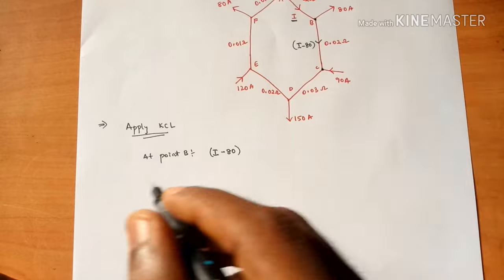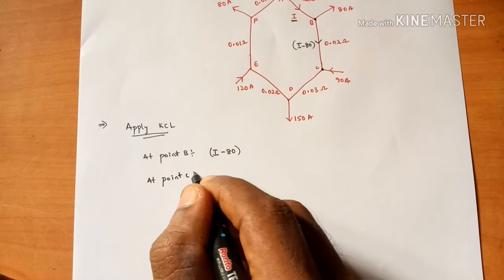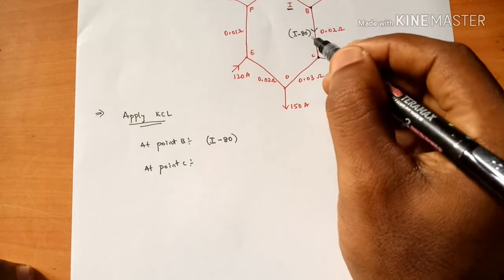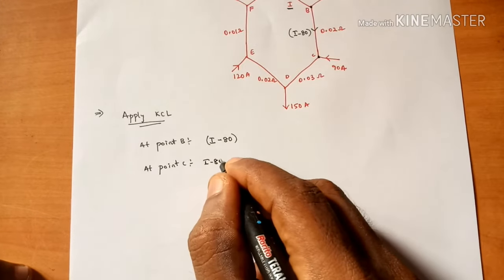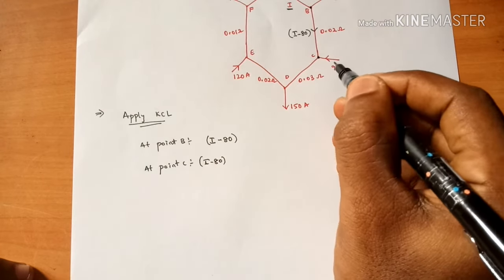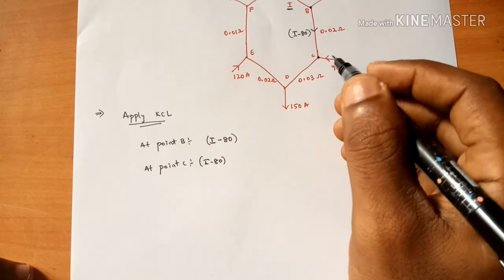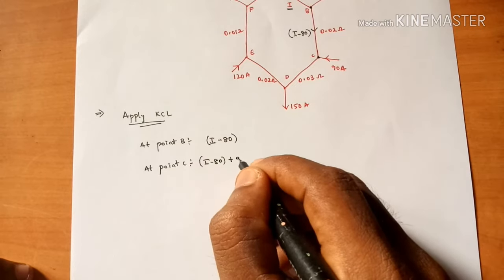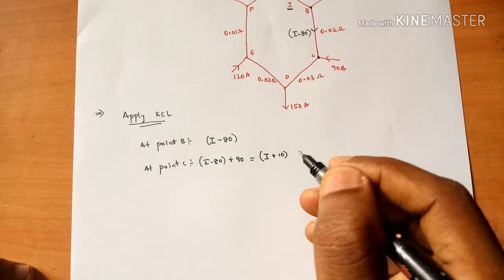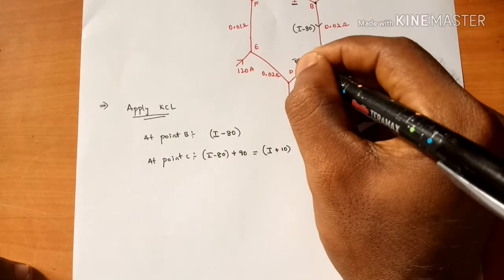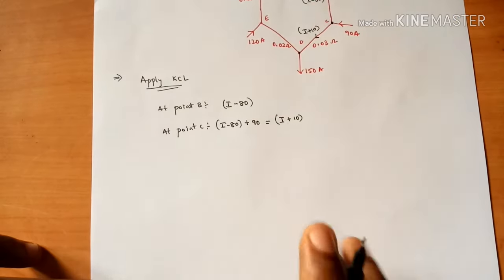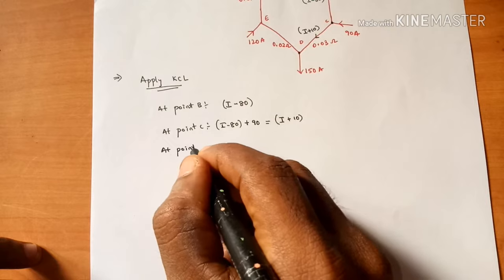Next, we apply KCL at point C. At point C, the current I minus 80 is entering, and one more current of 90 amps is also entering. So after simplification, the current from branch C to D will be I plus 10.